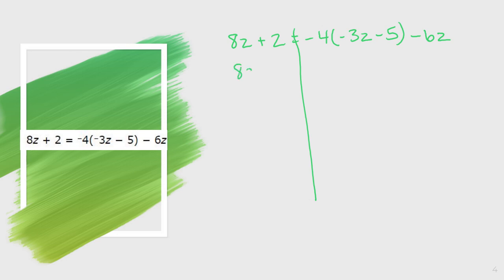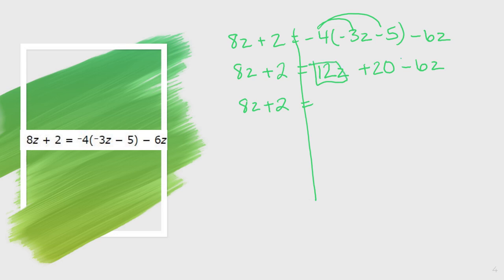On my left side, I cannot combine 8z plus 2, so I'm just going to bring that down. On the right side, I can distribute my negative 4. Negative 4 times negative 3z — it's a negative times a negative, and 4 times 3 is 12, so multiplying by the variable gives 12z. Then negative 4 times negative 5 is positive 20. I bring down my negative 6z. Now I have 12z minus 6z: 12 minus 6 is 6, so 12z minus 6z equals 6z.